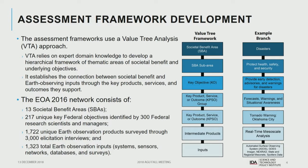The approach we use, shared with NOAA and USGS, is a value tree assessment approach. The value tree links societal benefit areas at the top, down through objectives to key products, services, and research outcomes, and finally to Earth observation inputs at the very bottom. We had 13 different societal benefit areas, 217 key objectives defined by federal scientists, approximately 3,000 elicitation interviews covering over 1,700 unique Earth observation products, services, and research outcomes, and ultimately 1,323 total Earth observation inputs.